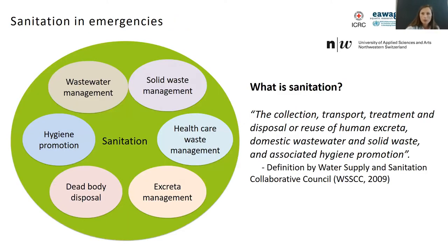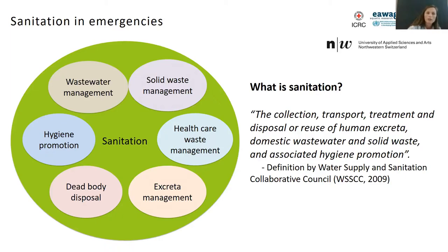What is a sanitation system generally — what does it address? One definition from the Water Supply and Sanitation Collaborative Council is that sanitation is the collection, transport, treatment and disposal or reuse of human excreta, domestic wastewater and solid waste, and associated hygiene promotion. So it addresses many different aspects: wastewater management, hygiene, dead body disposal, solid waste management, healthcare waste management, and hand washing. In this lecture we focus mostly on wastewater and excreta management.